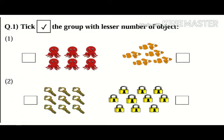Question number one: tick the group with lesser number of objects. In this question, in each set we are given two groups. We have to count the numbers and put a tick mark besides the group which is less in number. So let's begin with question one.